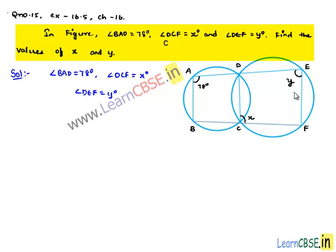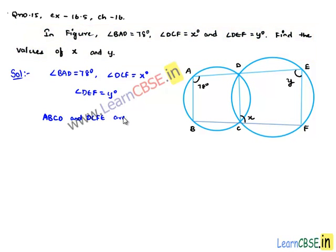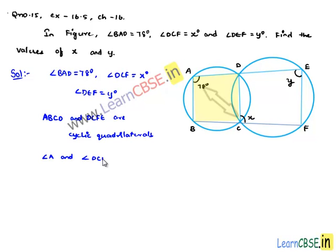Here, two circles are given in which two quadrilaterals are present. Therefore, ABCD and DCFE are cyclic quadrilaterals. Consider ABCD as a cyclic quadrilateral. Then we can say angle A and angle DCB are opposite angles in the cyclic quadrilateral ABCD.